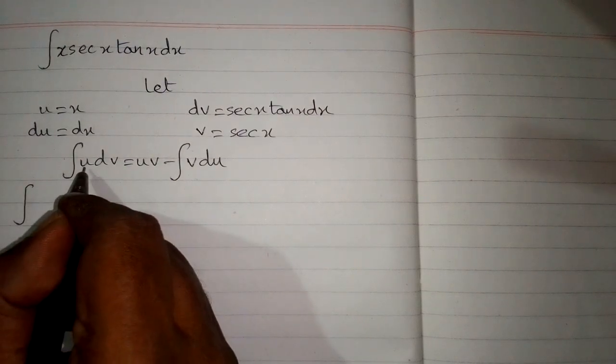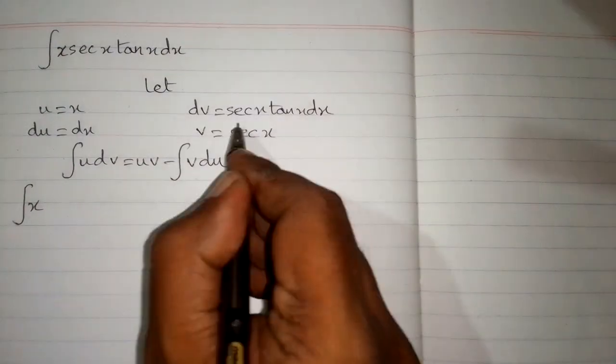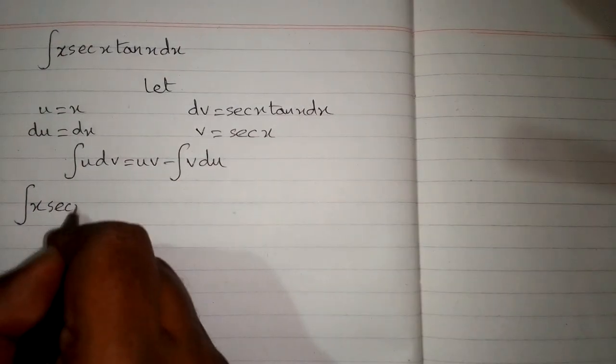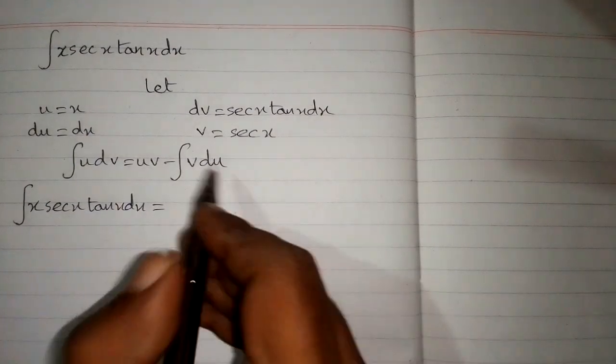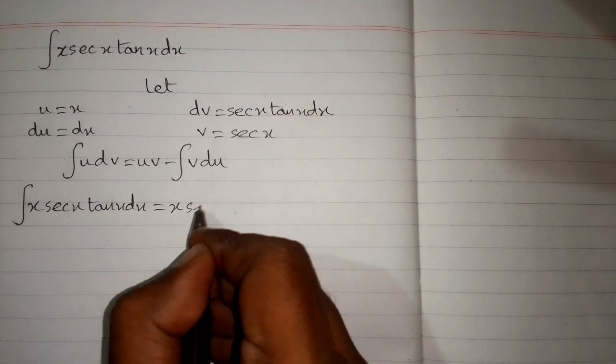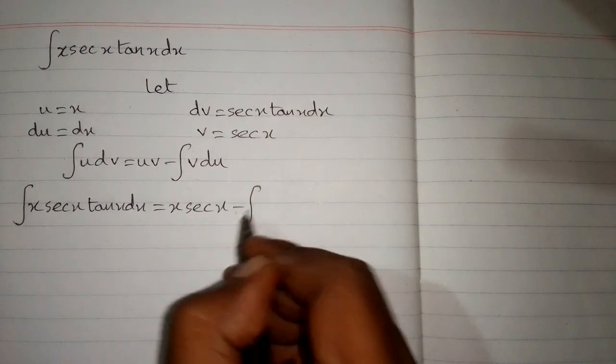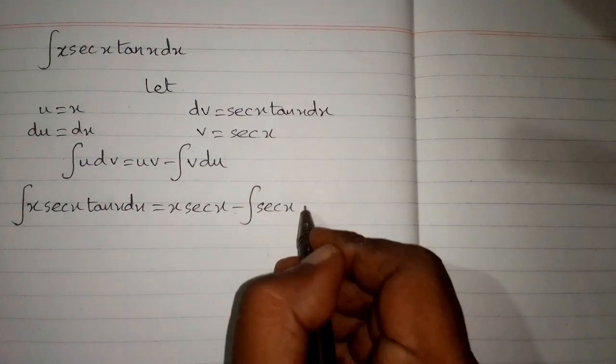Now we substitute the values. We write x times dv, where dv is sec x tan x dx. This equals uv minus the integral of v du, where v is sec x and du is dx.